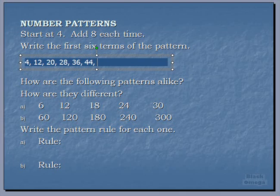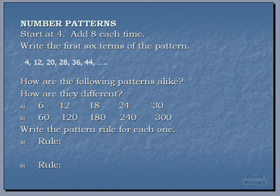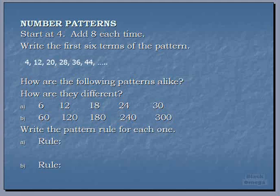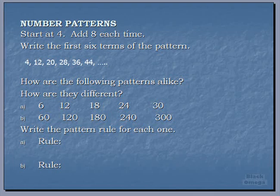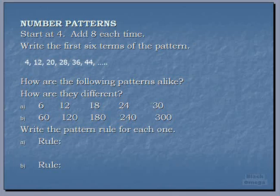Eight more is 36, and the last one for this pattern is 44. This can go on and on, but we're just writing the first six terms, so we'll put a couple dots there. That's what our pattern looks like when we start at 4 and add 8 each time.